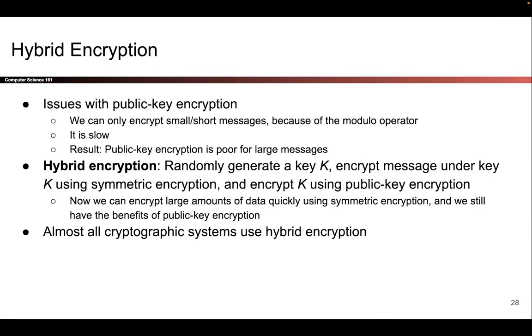We've now shown two public key encryption schemes. Public key encryption is great — it allows Alice and Bob to communicate securely even though they don't have a shared secret. But there are some issues.